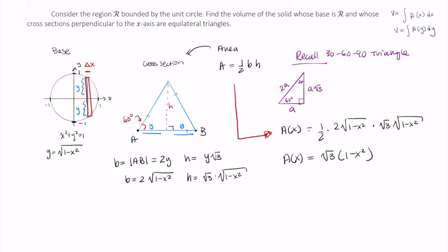Now I can integrate and find the volume as the integral of a of x dx, and x runs from negative 1 to positive 1. These regions, however, from here to here are symmetric, so I can just rewrite this as 2 times the integral from 0 to 1 of my area. All right, so now let's actually put in this function here for area, root 3 times 1 minus x squared dx, and let's integrate.